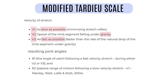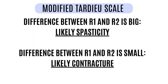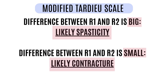For the angles R1 and R2: R1 is the angle at which the catch is presented during fast velocity, meaning V2 or V3. R2 is the passive range of motion following slow velocity, which is V1. The importance of R1 and R2 comes when the difference between these two values is big or small. When it is big, the likelihood of spasticity is high. When the difference is small, the likelihood of a contracture is high.